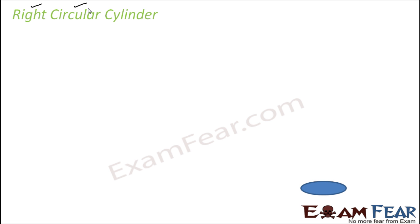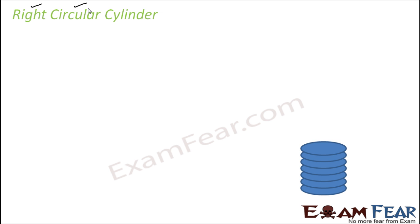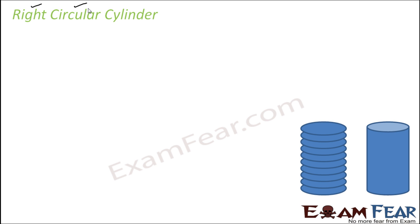Let's understand right circular cylinder. Please pay attention to this word 'right circular.' Let's try this experiment — take a circular plate and stack a few of these circular plates on top of each other. What you get is a cylinder. If the stack is kept vertically, we get a right circular cylinder, where it is kept at right angles to the base, and the base is circular.